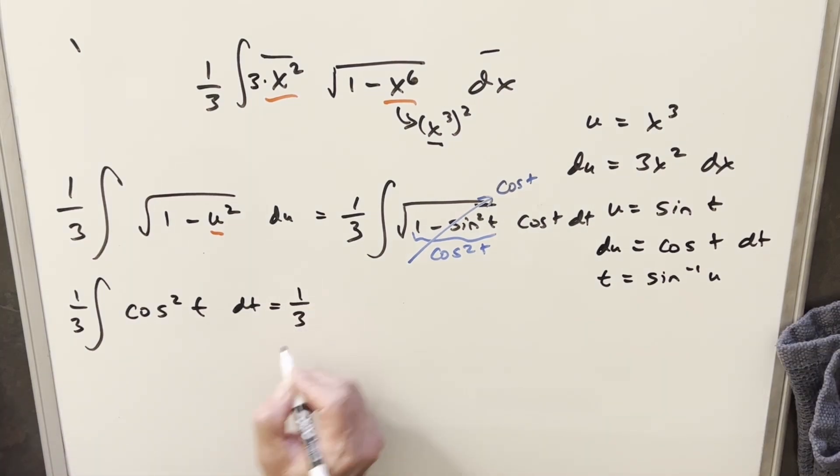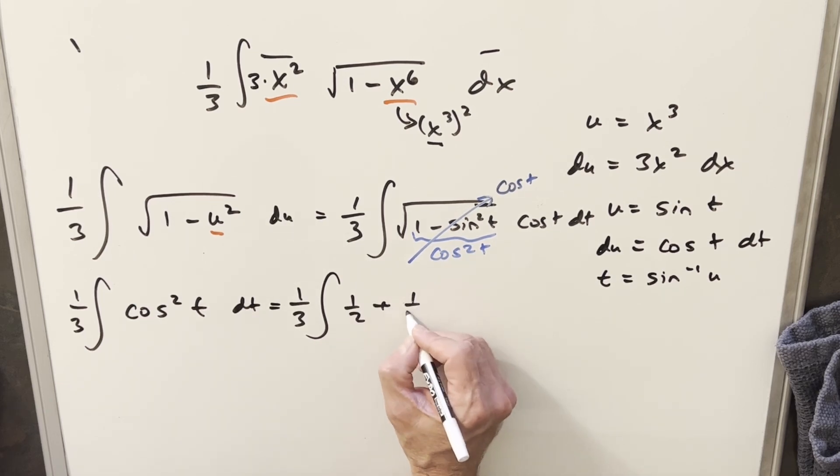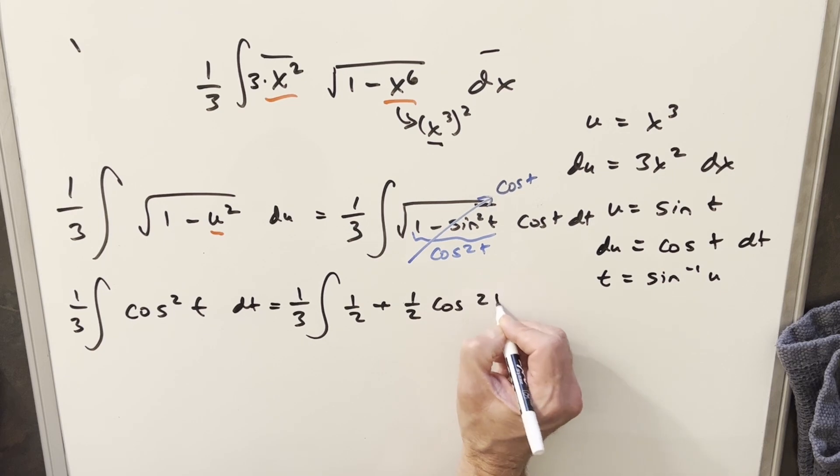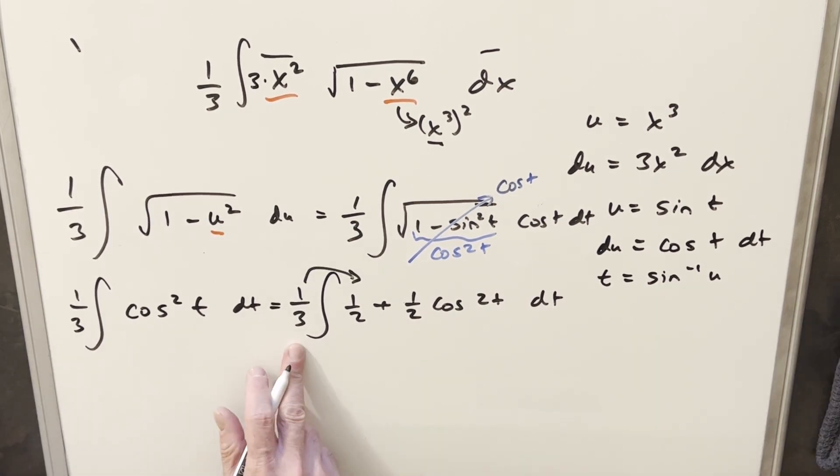Okay, now at this point, I'm just going to use the formula to reduce the power on the cosine squared. So I can write this as 1 half plus 1 half cosine of 2t. And then now we can integrate this. So when we distribute in the 1 third, we get 1 sixth here. We integrate 1 sixth. We're going to have 1 over 6t.